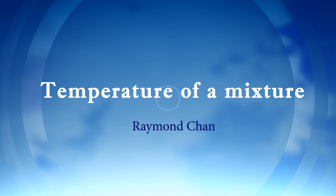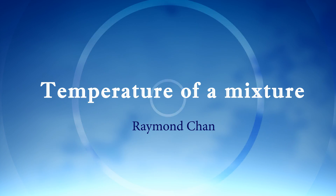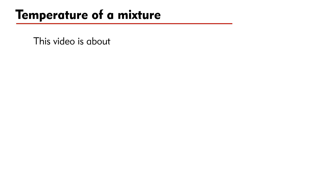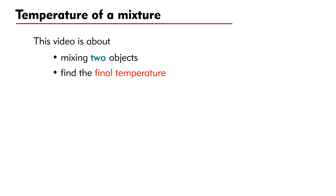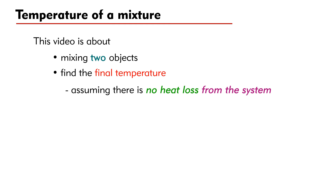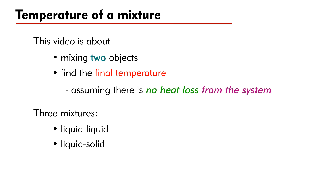Hi everybody, thank you for watching my video on physics. The topic in this video is about mixing two objects at different temperatures. You will learn how to find the final temperature of the mixture, assuming that there is no heat loss from the system. In this video, we shall discuss three examples of mixture: liquid-liquid, liquid-solid, and solid-solid.